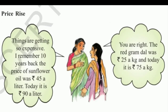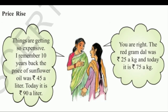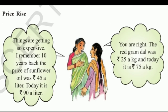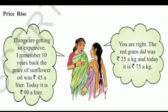Price rise — here things are getting so expensive. I remember 10 years back the price of sunflower oil was Rs. 45 a litre, today it is Rs. 90 a litre. You are right, the red gram dal was Rs. 25 a kg and today it is Rs. 75 a kg.